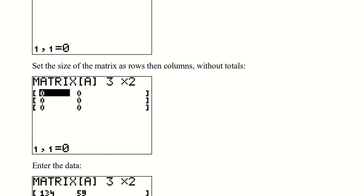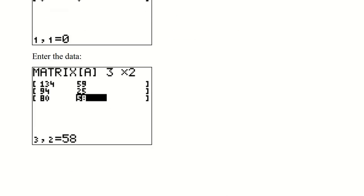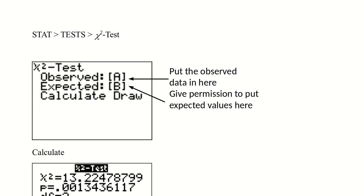So we're going to set the size of the matrix, first as rows and then as columns. So three by two has three rows and two columns. So once we set the size, we can then enter the data. So here's that data. Notice we're not entering the totals. So the genders are the columns and the classes are the rows. We're entering this just like we saw it in the table.